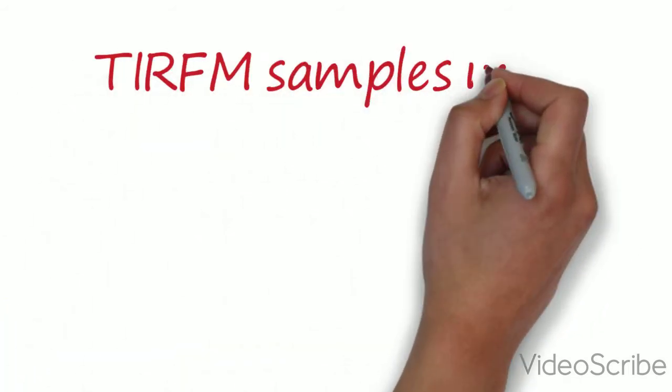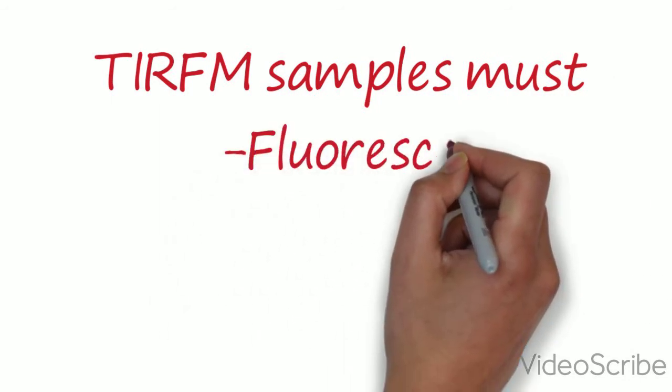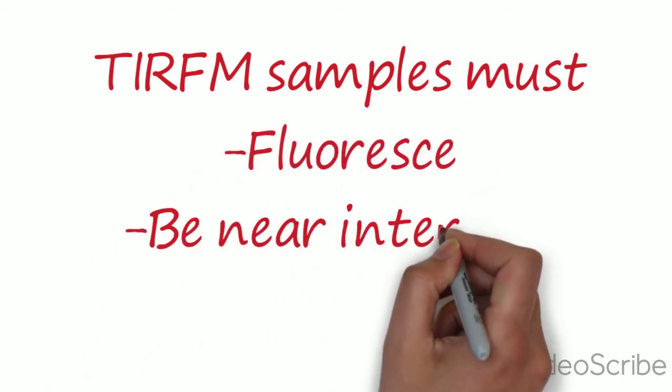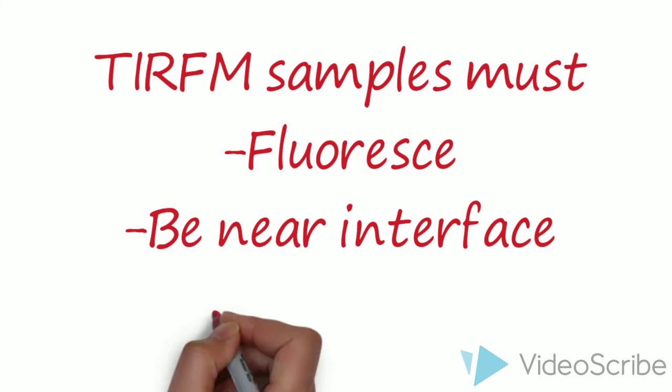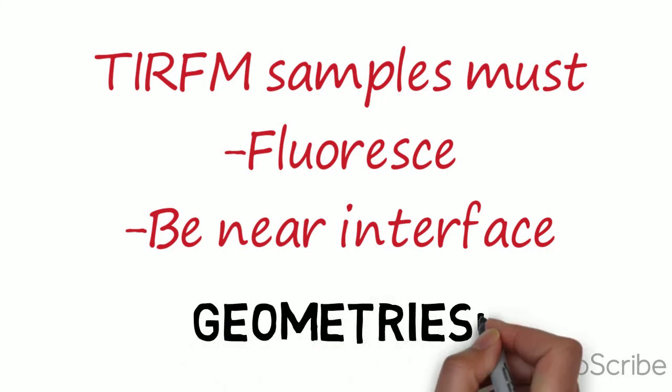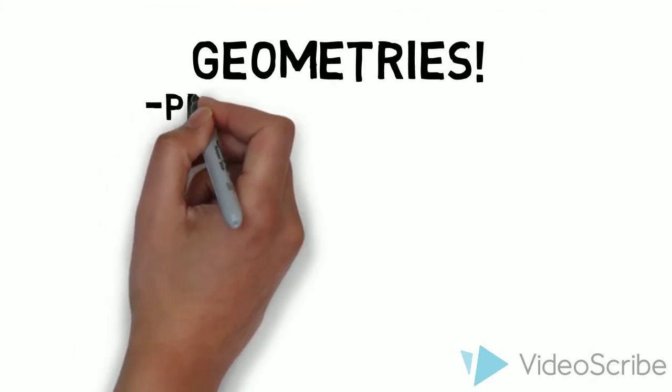TIRF-M works for samples that fluoresce and are close to an interface. There are several different geometries that can be used for this technique, and I will be discussing the two most common: prism-based and objective-based.